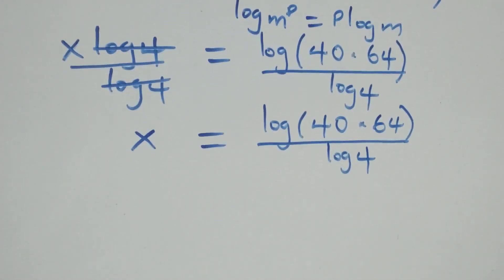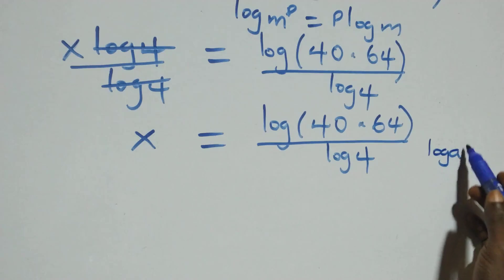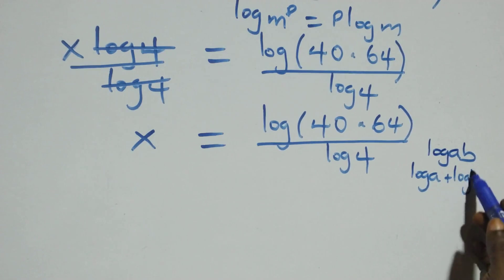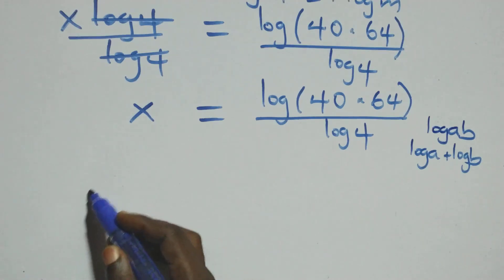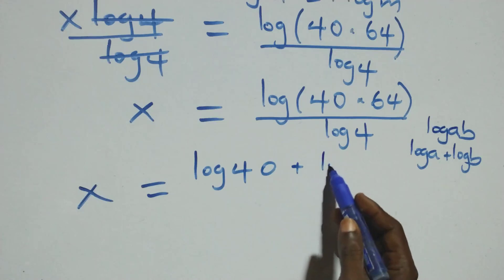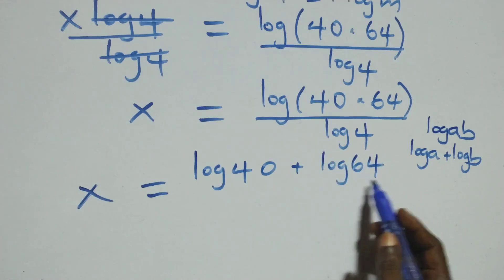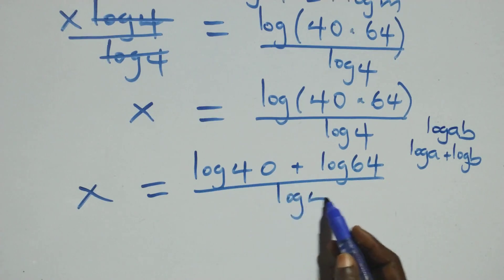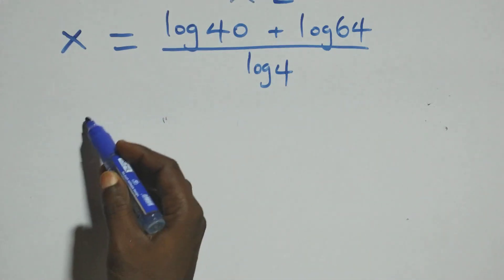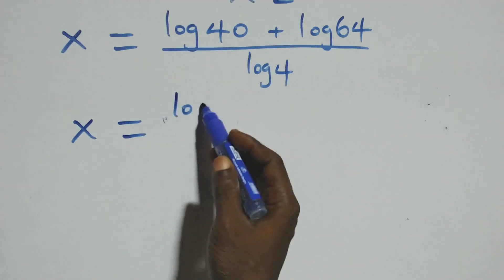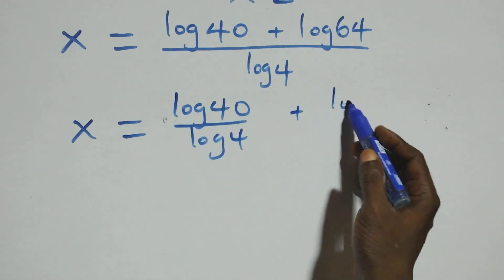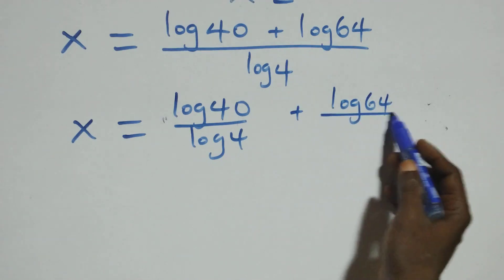The next step follows the law of logarithms. When we have log a times b, this is the same thing as log a plus log b. So what we have becomes x equals log 40 plus log 64 over log 4. We then separate this into two fractions: x equals log 40 over log 4 plus log 64 over log 4.